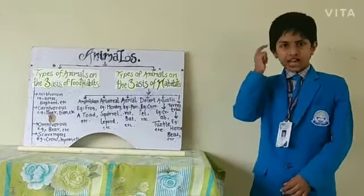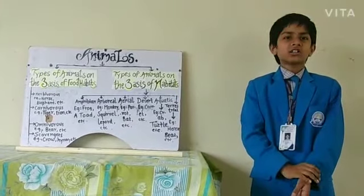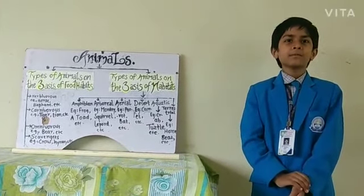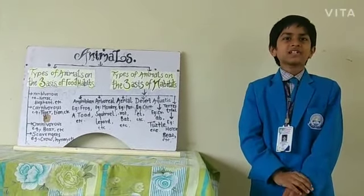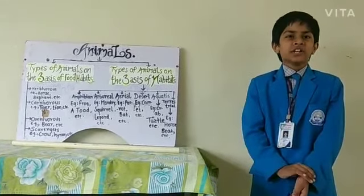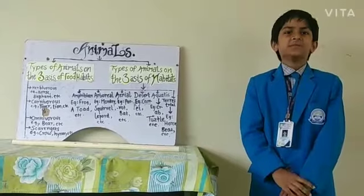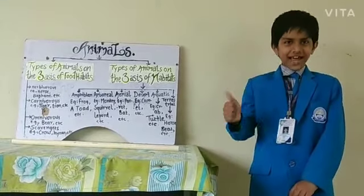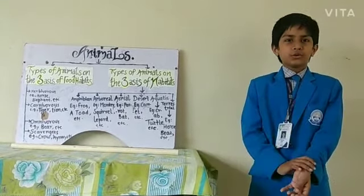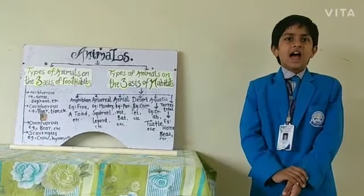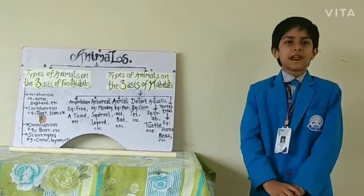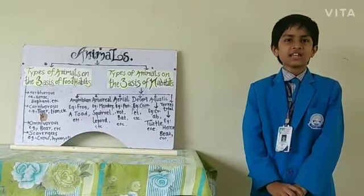Do you guess what is eaten by animals like cow, sheep, giraffe, deer, etc.? Yes, they eat plants. Animals that eat plants and plant products are called herbivorous.